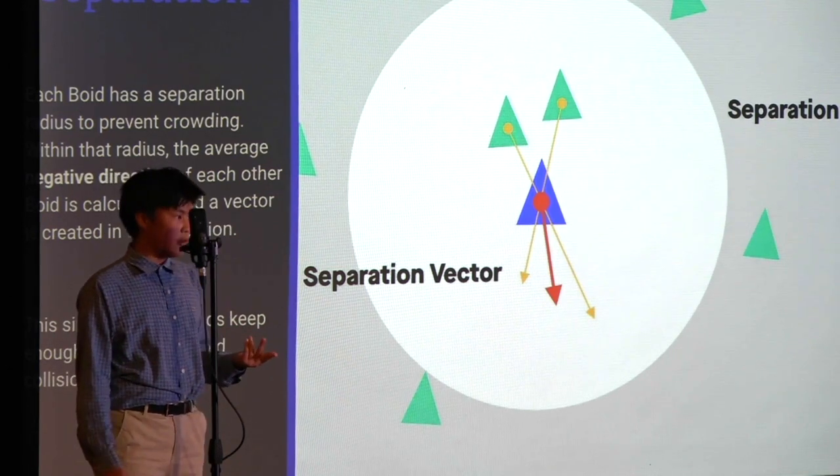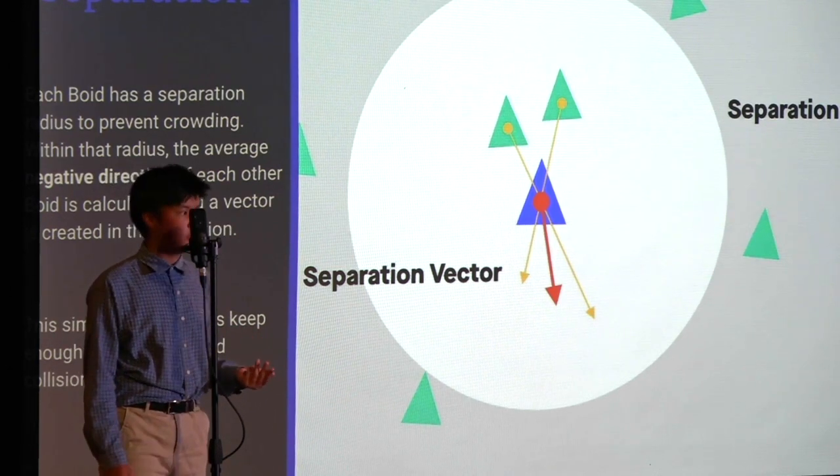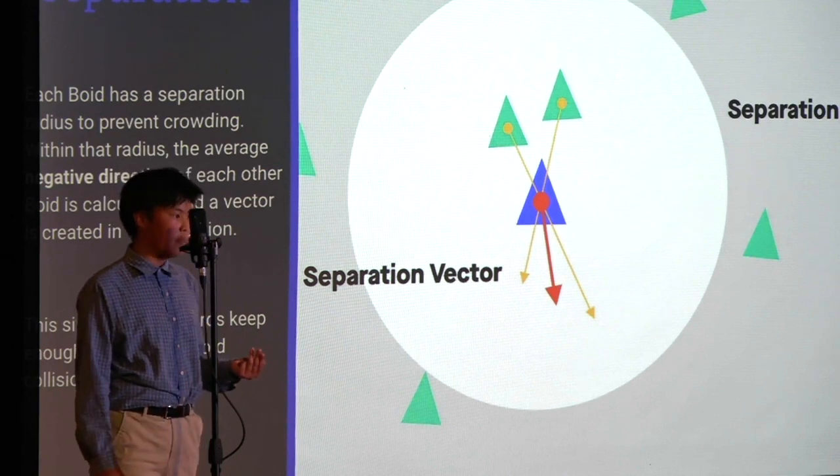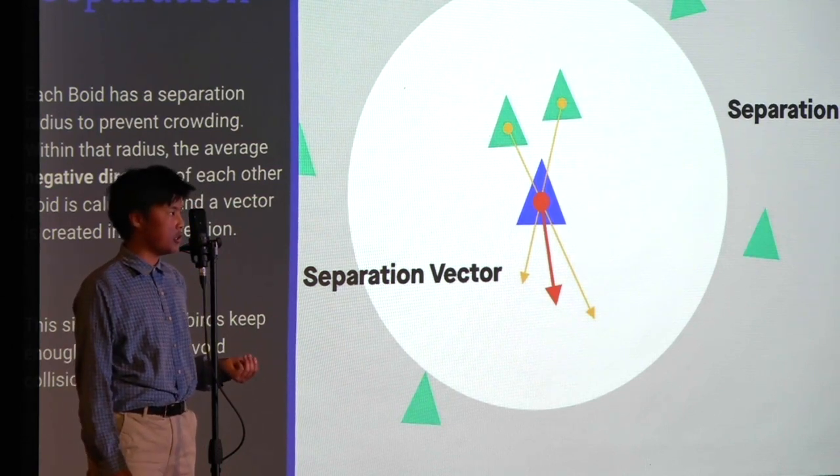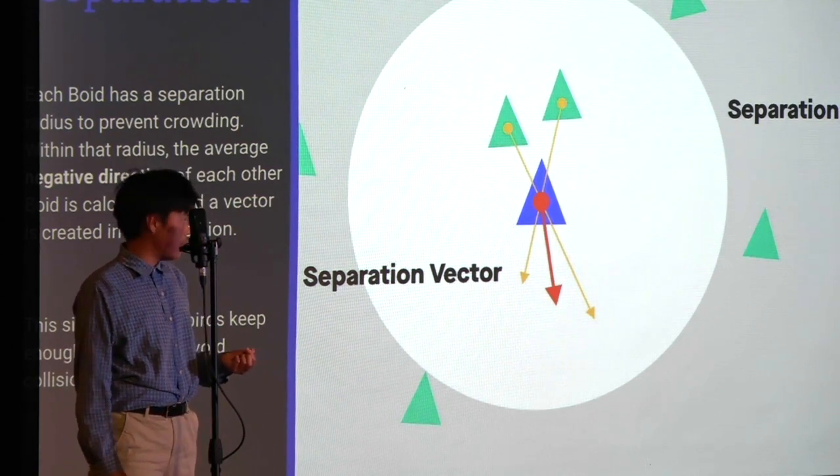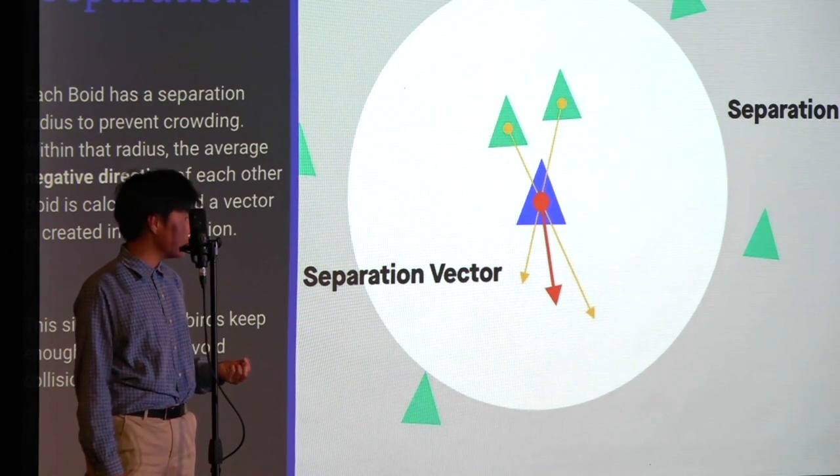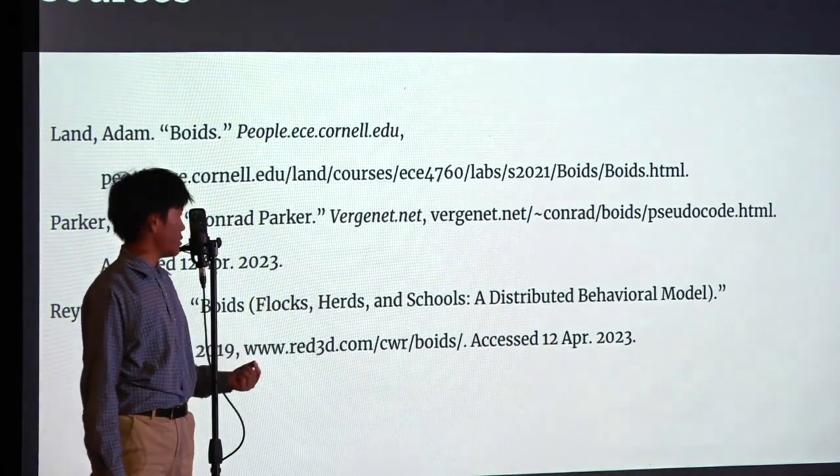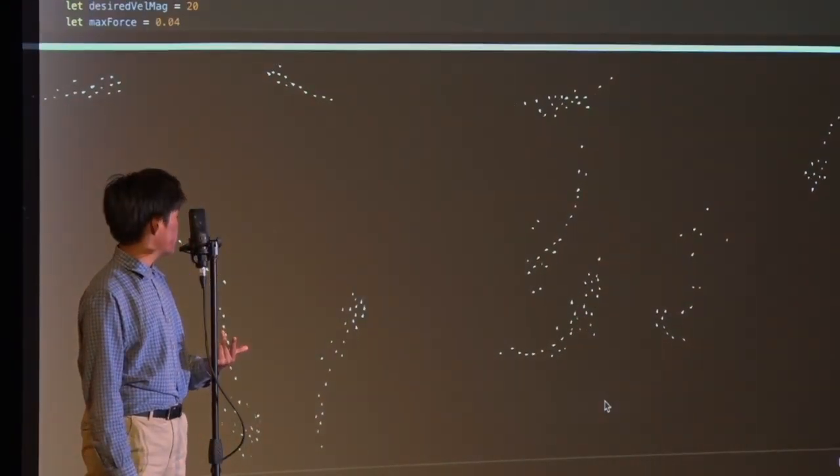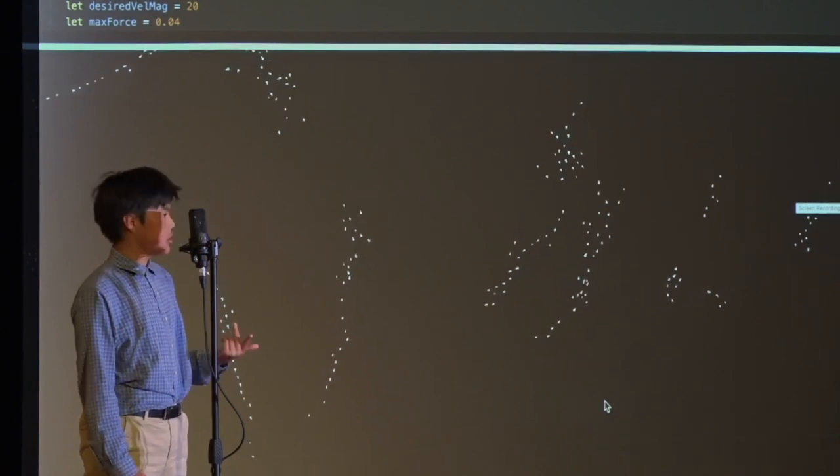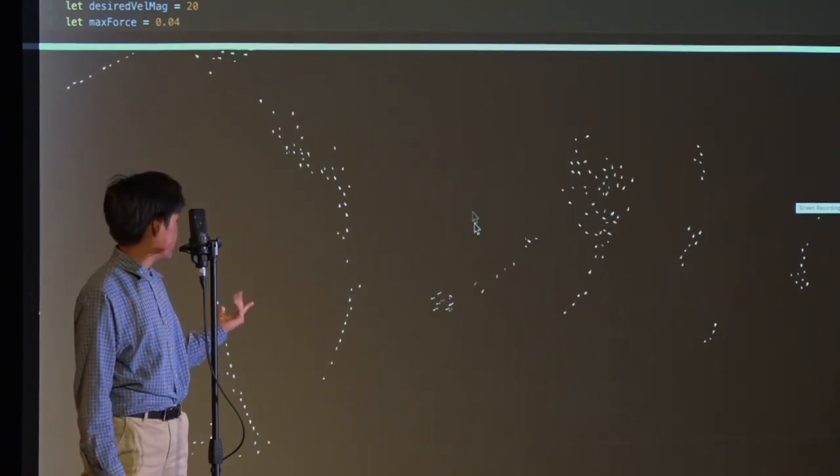So I learned about this a while ago, but to test if these three very simple rules actually work, I created a simple boid demonstration in JavaScript. So these are my sources. This is just a recording of my boid simulation. This is the base heading. Right now there are 300 boids on the screen.